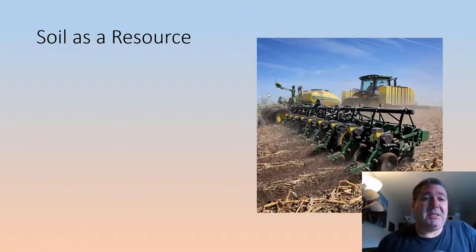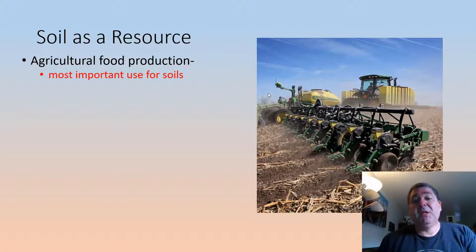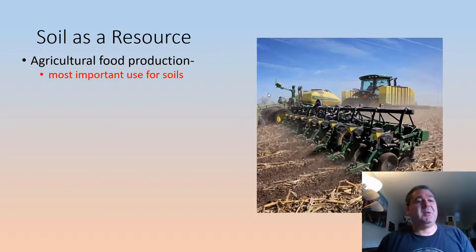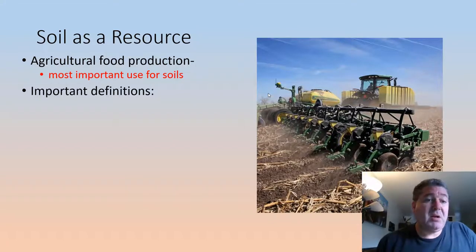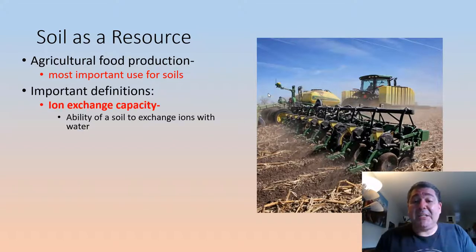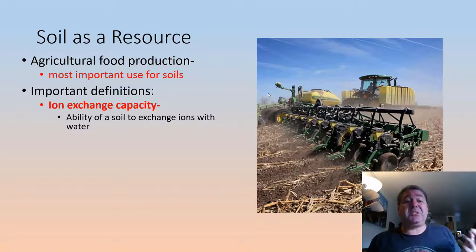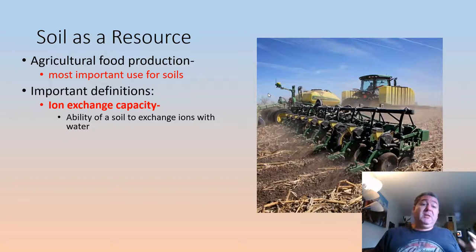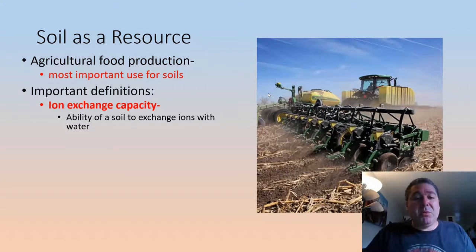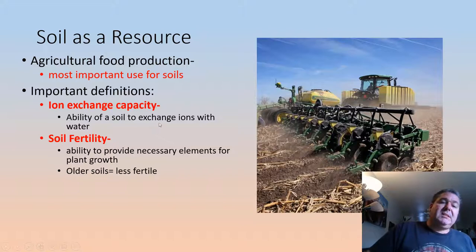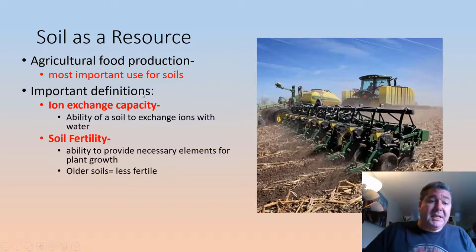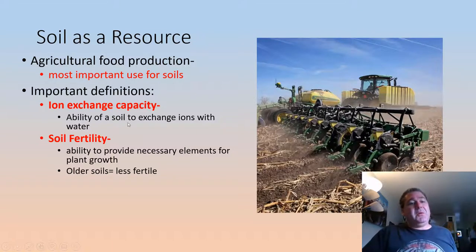Soil as a resource is, of course, our most important use of soil — agricultural food production. As our population continues to expand, we're going to need more and more land for agricultural food production. The ion exchange capacity is the ability of soil to exchange ions with water — how can we keep those ions around in our soil? The more clays and organics, which are negatively charged particles, we can keep some of those positively charged cations around a little bit better.